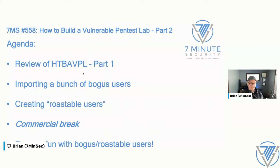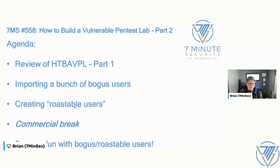Then we're going to fill this domain full of realistic-looking users, put some properties into their user fields. Rather than manually creating each one, we can do it quickly at huge scale using some cool Python tools. Then we'll create a couple of roastable users — users configured in such a way that you can ask Active Directory directly for usernames and hashes. Sometimes we can crack those and have instant domain admin.